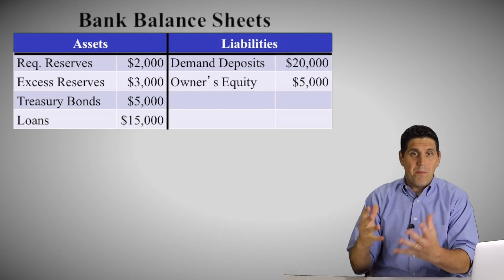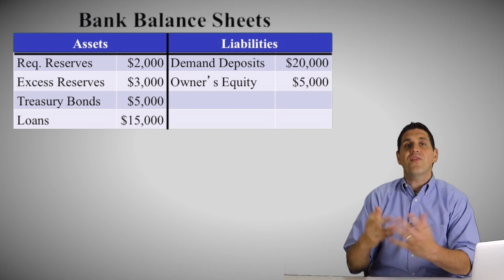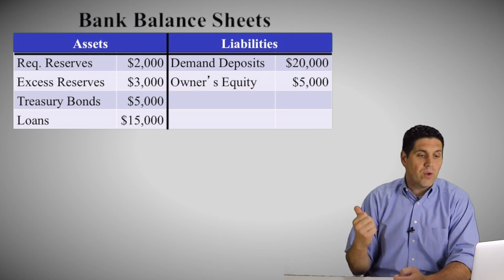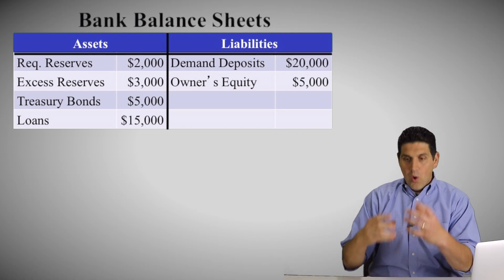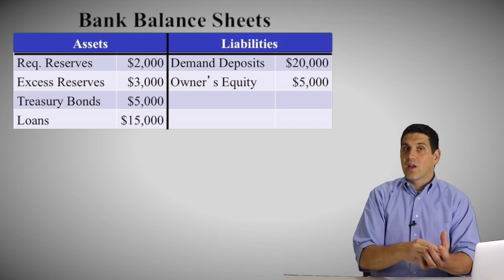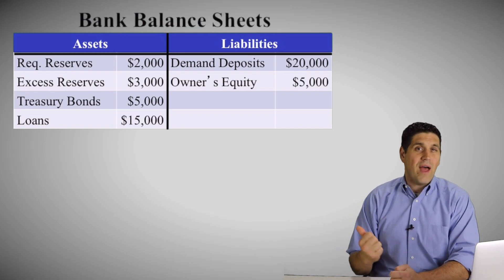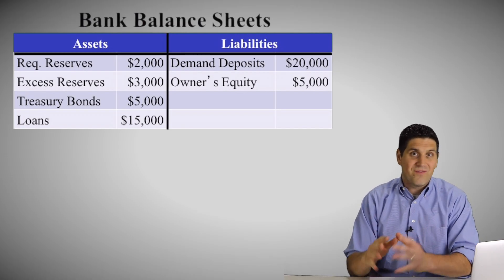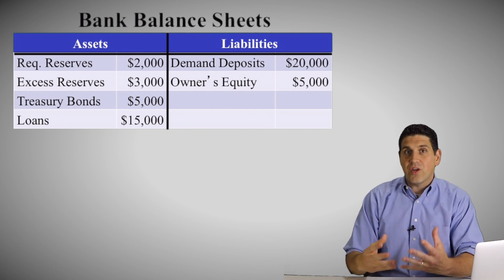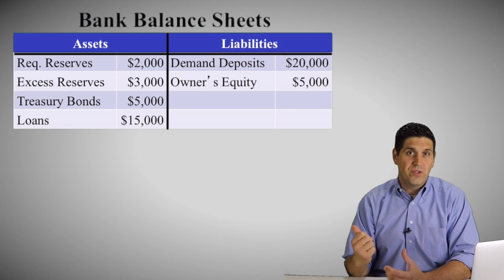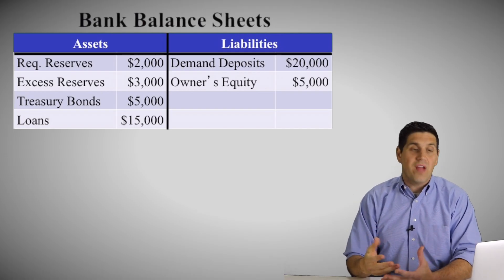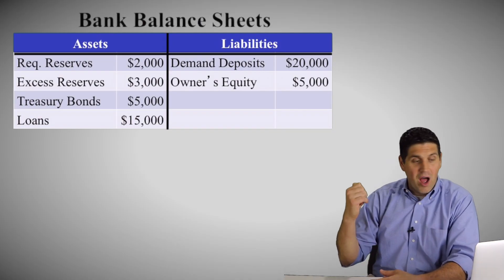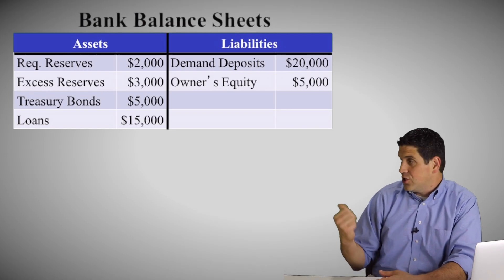This shows you a bank balance sheet for some random bank. On the liabilities side, they've got $20,000 of demand deposits — people have deposited $20,000 to the bank. Owner's equity is another $5,000 for a grand total of $25,000 in liabilities. Now with that money, they've got $2,000 of required reserves, $3,000 of excess reserves — money they can loan out but haven't yet — they bought $5,000 worth of treasury bonds and then $15,000 of loans. That adds up to $25,000 of assets. It's a bank balance sheet — it balances out. Whatever adds up on the liability side needs to add up on the asset side; these two have to be equal.